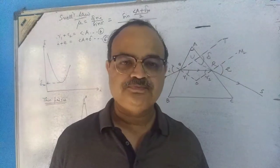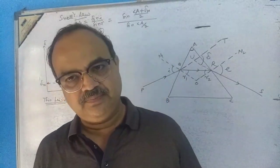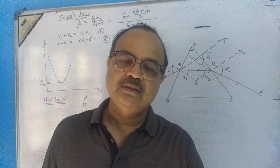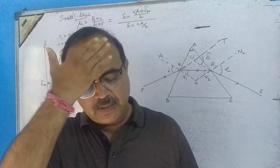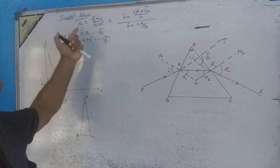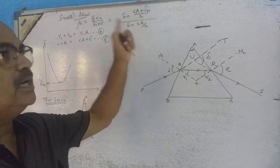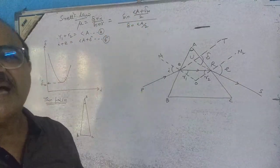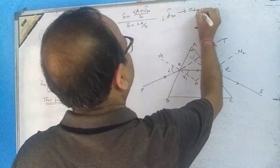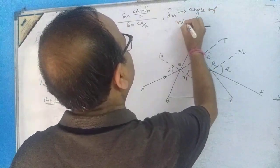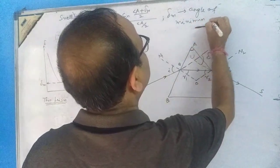In our previous class we already discussed the prism formula — a very important discussion. We arrived at the formula: mu is equal to sine of (A plus delta-m) by 2, divided by sine of A by 2. This is the prism formula, where delta-m is the angle of minimum deviation.